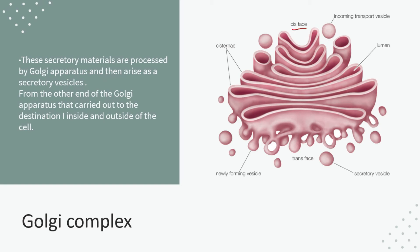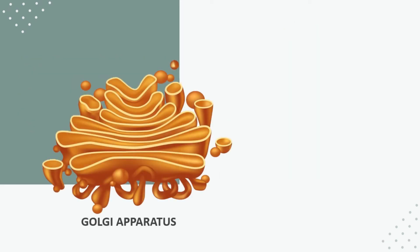In the Golgi complex we have two phases: cis phase and trans phase. The cis phase receives the incoming transport vesicles, and the trans phase releases secretory vesicles out of the Golgi complex. Just like a society has an entry gate and an exit gate, the cis phase is the entry where incoming transport vesicles arrive, and the trans phase is the exit where secretory vesicles go out.